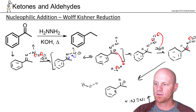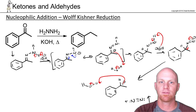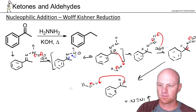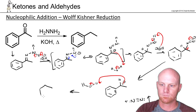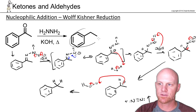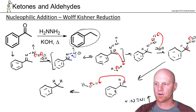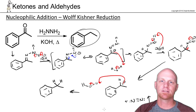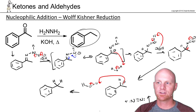Finally, all we're simply going to do is one more proton transfer reaction to get our final product. Now this carbon has not just one, but two hydrogens — and that was our final result. There's the latter half of the mechanism for the Wolf-Kishner reduction.